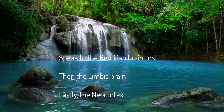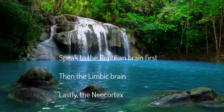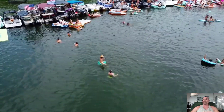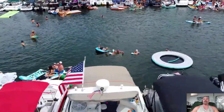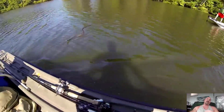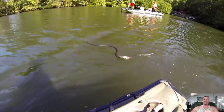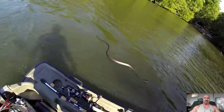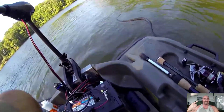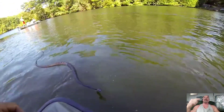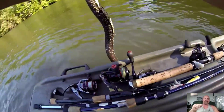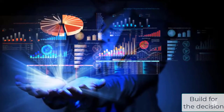This brain can make survival decisions before you or the other brains can even begin to process the data. I know this firsthand: we were out at the lake, I was floating on a raft talking with friends and family. I felt something brush my leg, and before I could look, I had reached down, grabbed, and thrown a four-foot water snake at least 30 feet across the water. I literally grabbed and threw a snake before my neocortex could even register that I had a snake on my lap. That's the reptilian brain, and that's what we try to speak to in our marketing.